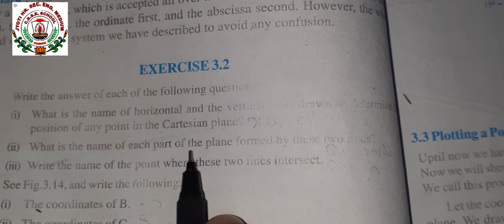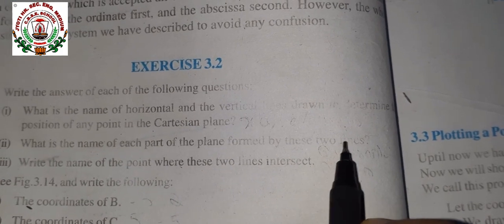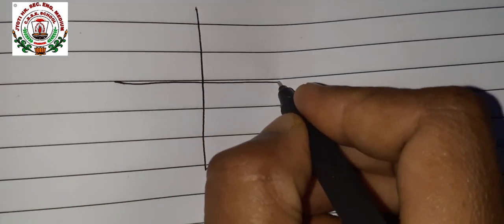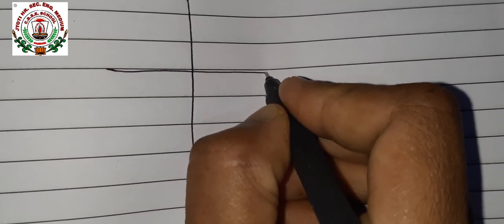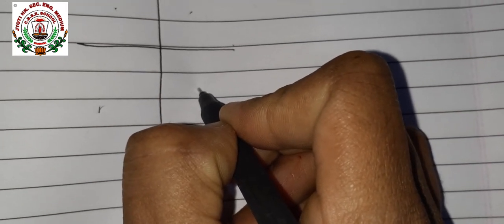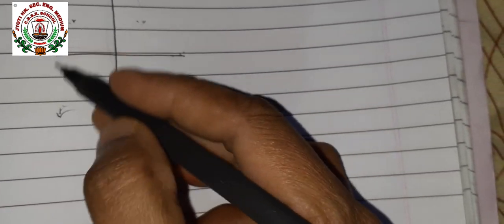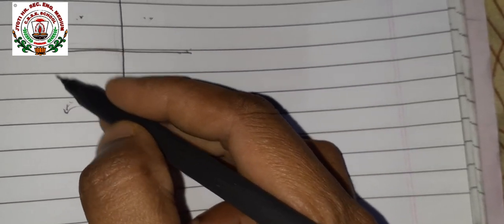Now the second question: what is the name of each part of the plane formed by these two lines — x-axis and y-axis? When the lines are plotted, this is y-axis and x-axis. The name of each part of the plane — this one, this one, this one, and this one — is called a quadrant: first quadrant, second quadrant, third quadrant, and fourth quadrant. The two lines x-axis and y-axis intersect each other to form different quadrants, so the answer is quadrant.